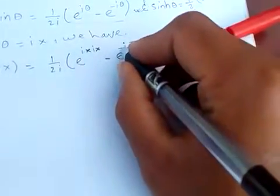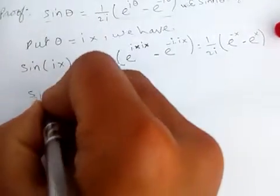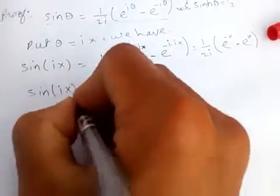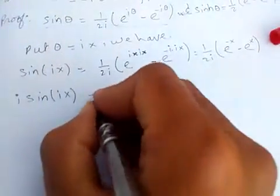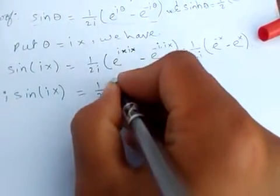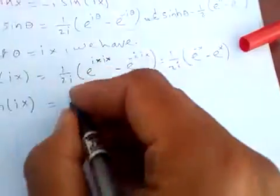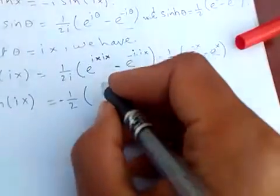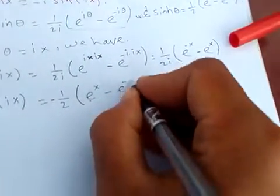For sin(ix), we can transfer the i to get (1/2), then factor out e^x - e^(-x).